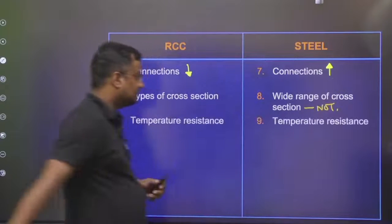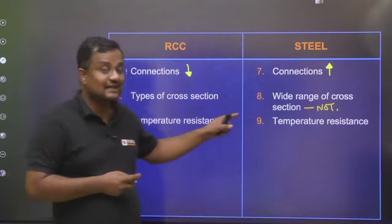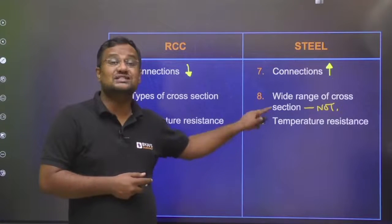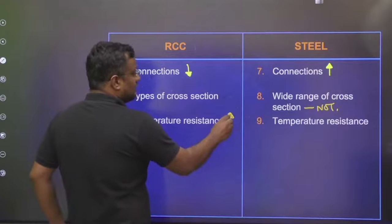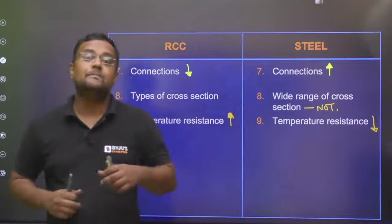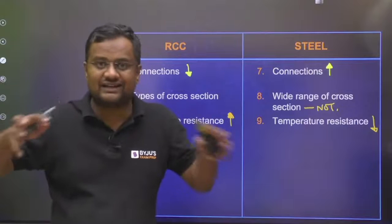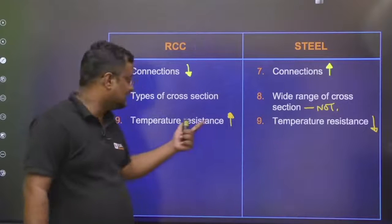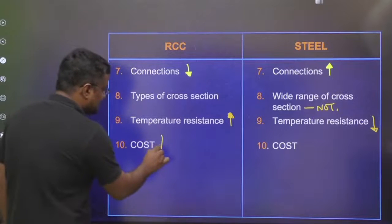The next difference is temperature resistance. In high-temperature areas, steel is not very good — there is corrosion and temperature-related deterioration. But concrete is very good in temperature resistance. Even in areas near a furnace, blast furnace, or factory, concrete's strength does not change drastically, whereas steel can melt or deteriorate significantly.